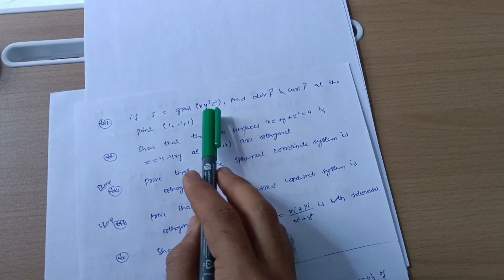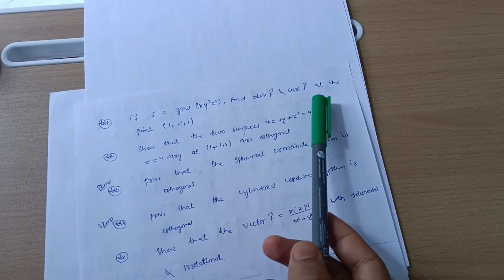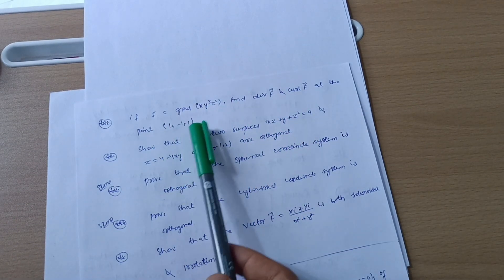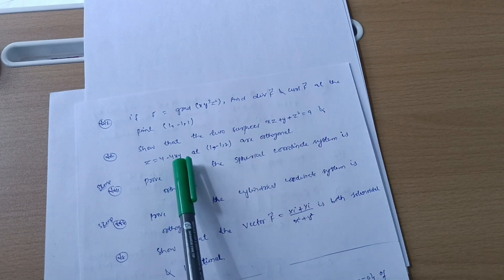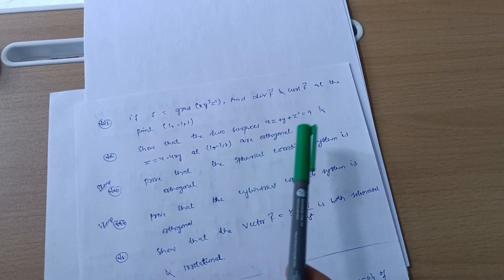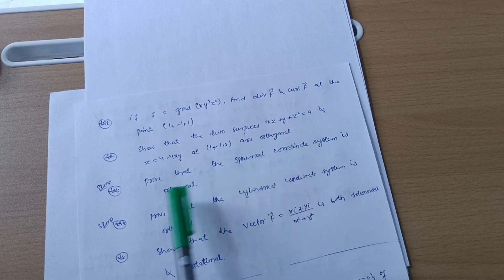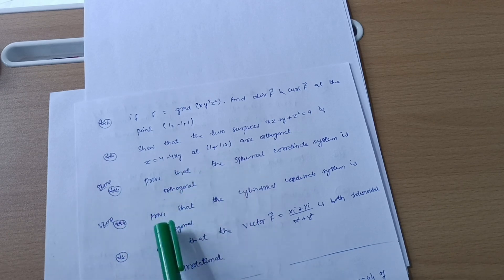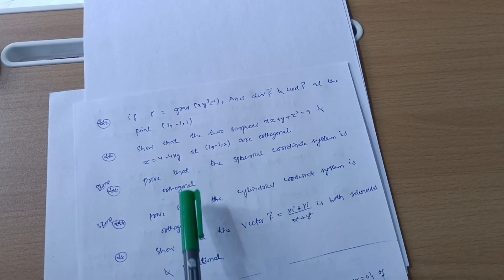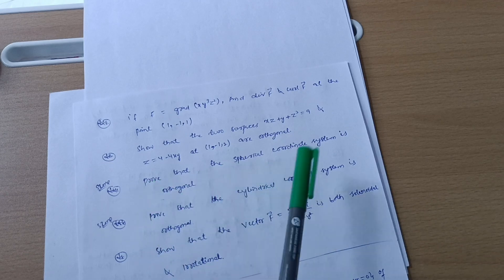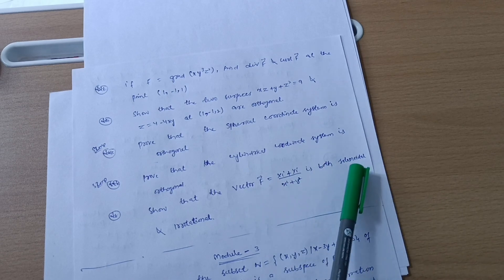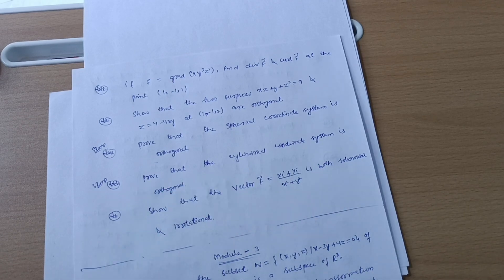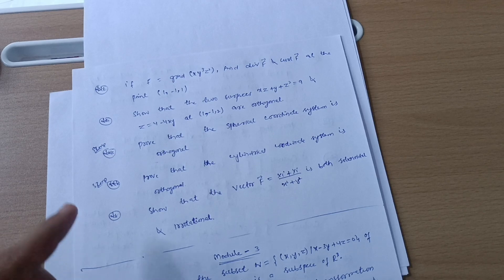Also: if F = grad(xy³z²), find divergence and curl of F at the point (1, −1, 1); show that the two surfaces xz + y + z² = 9 and z = 4 − 4xy at (1, −1, 2) are orthogonal; and prove that the spherical coordinate system is orthogonal — this is a super important one you should not leave. Also prove that the cylindrical coordinate system is orthogonal. Show that the vector F = (xî + yĵ)/(x² + y²) is both solenoidal and irrotational. You can surely get 14 marks from Module 2.